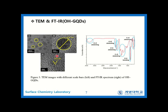From figure 3, the synthesized OH-GQDs have a diameter of 6.51 nanometers and a lattice spacing of 0.21 nanometers in TEM images. Also, in the FTIR spectrum, we could investigate peaks caused by OH bonds, CO bonds, CC bonds, and CH bonds.